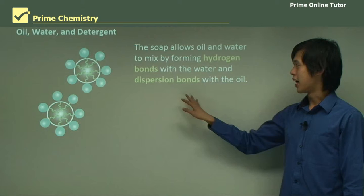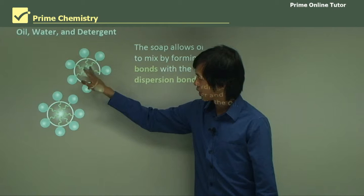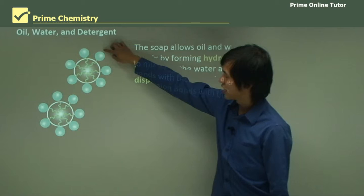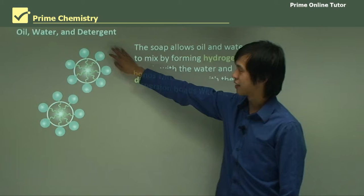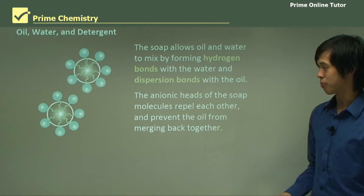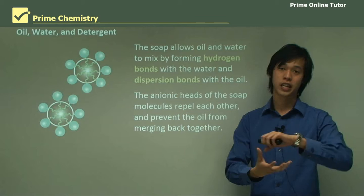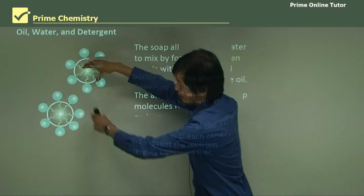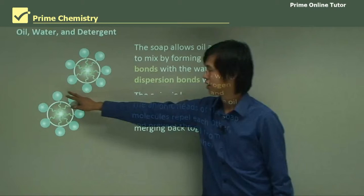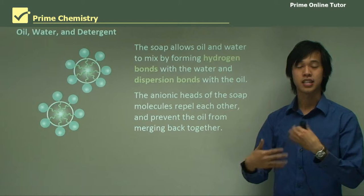Soap allows oil and water to mix by forming hydrogen bonds with the water and dispersion forces with the oil. The green hydrocarbon tail dissolves in the oil, while the blue negatively charged head attracts polar water molecules. The anionic heads of the soap repel each other and prevent the oil from merging back together — those negatively charged heads push the oil droplets apart, which is why soap acts as a stabilizer for this emulsion.